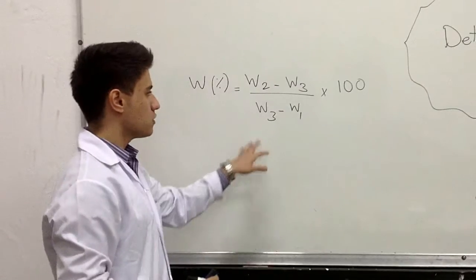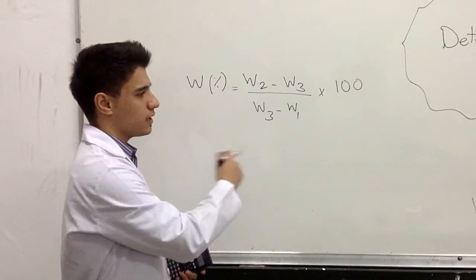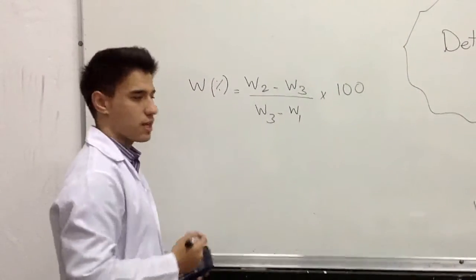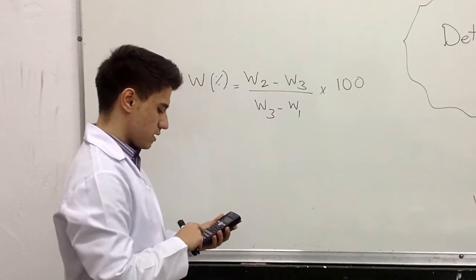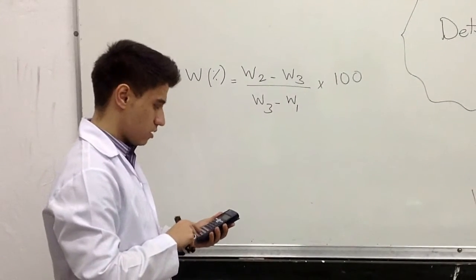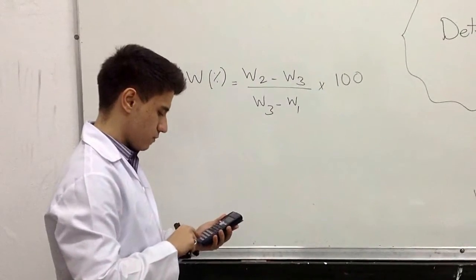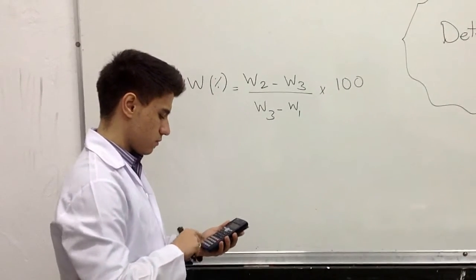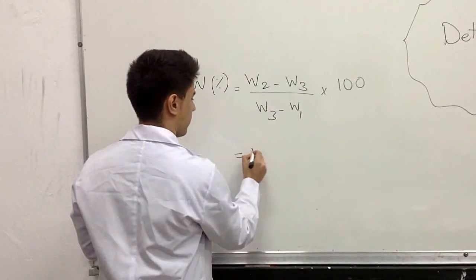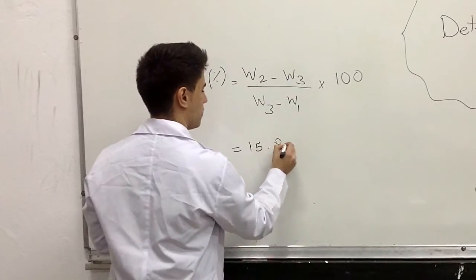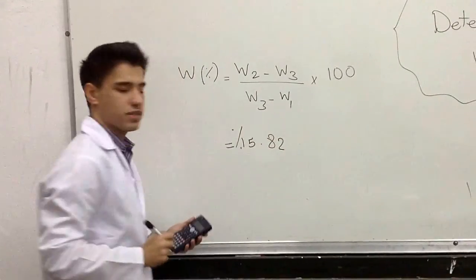The last step would be to use this formula and subtract the weights in order to find the water content, which would give us exactly 15.82 percent water content.